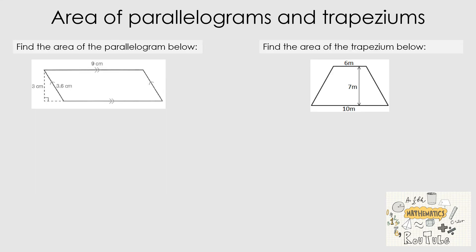Continuing with simple 2D shapes, we progress to finding the area of a parallelogram. We have a four-sided shape — a quadrilateral — with two sets of parallel lines. The formula is: area of a parallelogram equals base times height. We have been given three measurements: 3 centimeters, 3.6, and 9. Only base and height are needed.